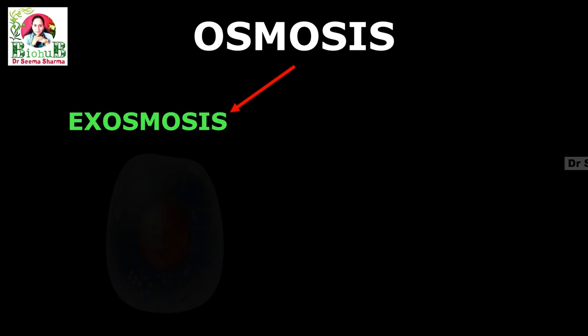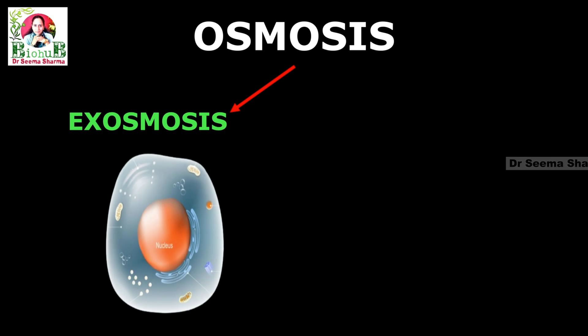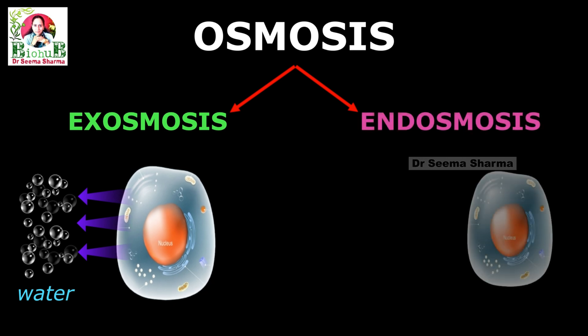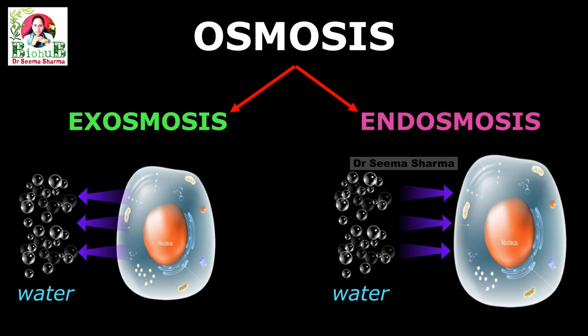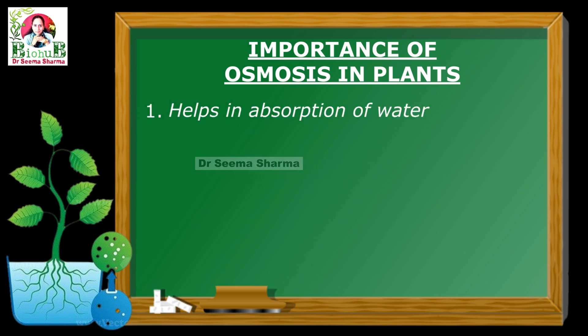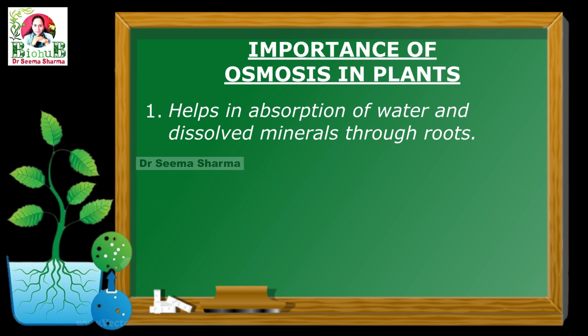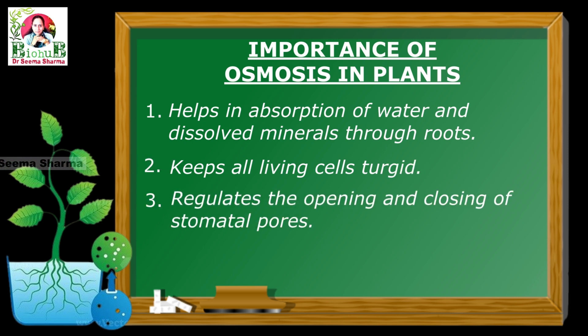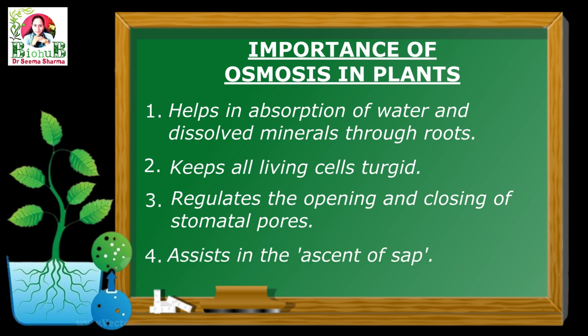Osmosis has two subtypes. Exosmosis, where the movement of solvent or water takes place outside the cell, and endosmosis, where the movement of water takes place into the cell. Regarding the importance of osmosis in plants: it helps in absorption of water and dissolved minerals through roots, keeps all living cells turgid, regulates the opening and closing of stomatal pores, and plays a significant role in ascent of sap.